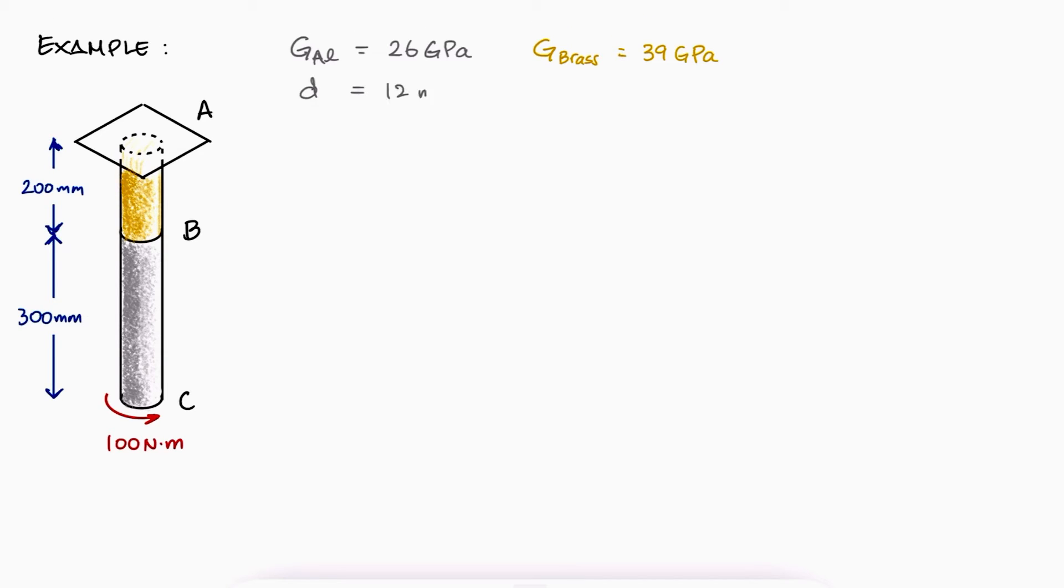Let's put all of these concepts together in a simple example. The aluminum rod BC is bonded to the brass rod AB. If both rods are solid and have a diameter of 12 millimeters, what is the angle of twist at C? Remember to pause here for a second and try this problem on your own before watching the solution.